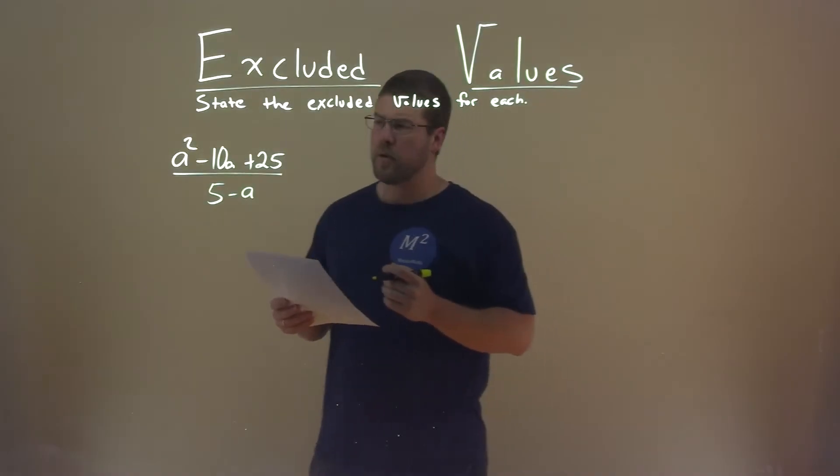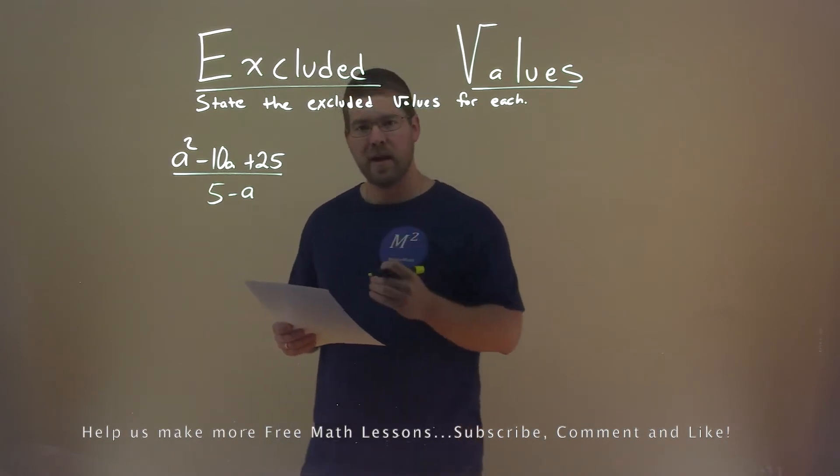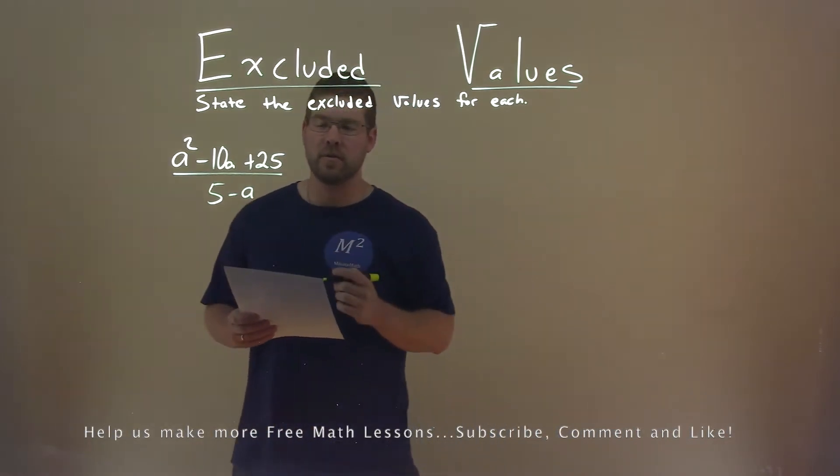We're given this problem right here: a squared minus 10a plus 25 over 5 minus a, and we want to find the excluded values.